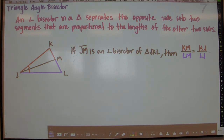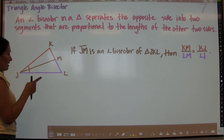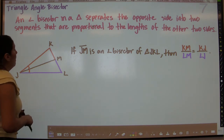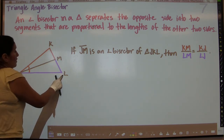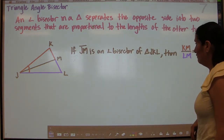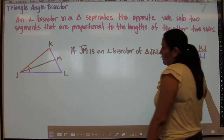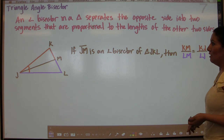Our last theorem for this section is the triangle angle bisector theorem. In addition to angle bisectors being proportional to corresponding sides, this theorem states that an angle bisector — like JM in triangle JKL — separates the opposite side into two segments proportional to the other two sides. So KM to ML equals KJ to LJ.